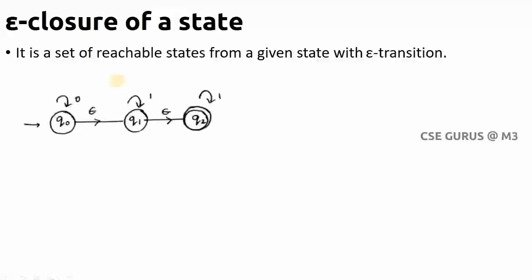Let us consider an example. Here you can see I can move from Q0 to Q1 without taking any input — that's why it is called an epsilon transition. I can also move from Q1 to Q2 without giving any input, which is also an epsilon transition. Now we need to find the ε-closure, which is the set of reachable states from a given state using epsilon transitions.